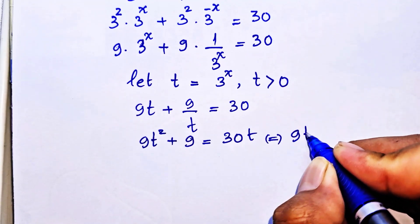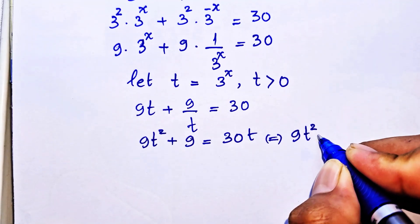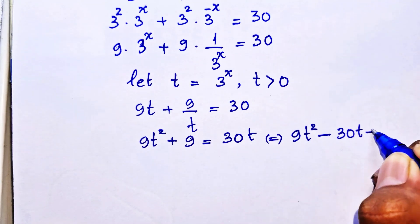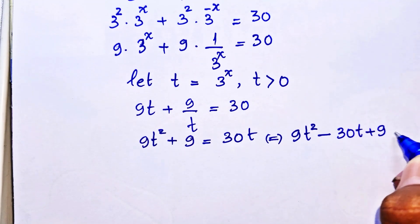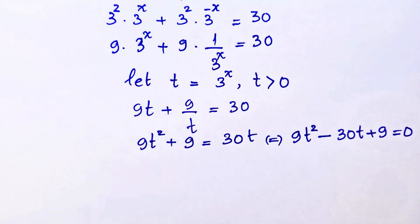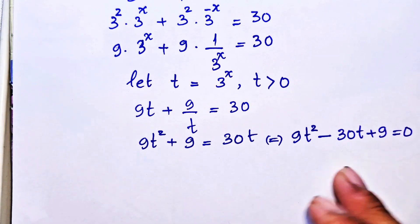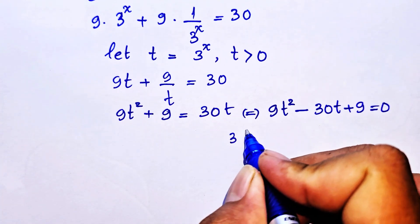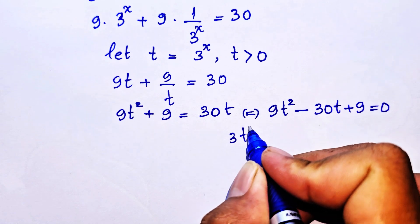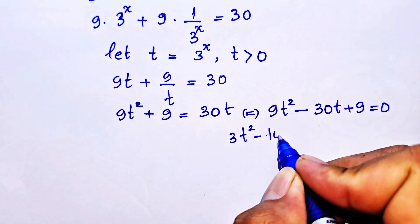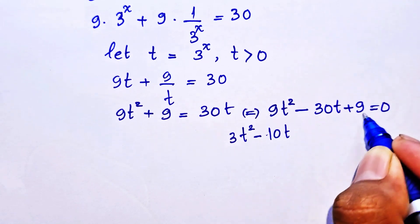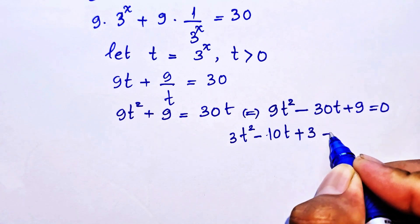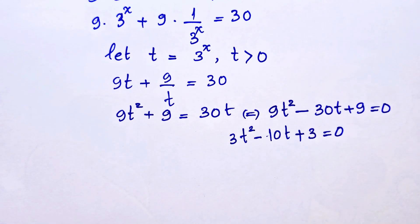We move 30t from the right-hand side to the left-hand side, giving 9t² − 30t + 9 = 0. Then we divide both sides of this equation by 3, so we get 3t² − 10t + 3 = 0.